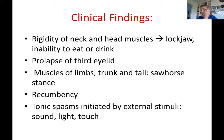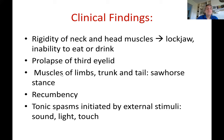The third eyelid normally comes and goes to protect the eye and clean the eyeball, but in tetanus it remains prolapsed the entire time. Because all limb, trunk, and tail muscles are contracting, the horse adopts a sawhorse stance. The tail is held in a flag position — erect and standing out. Horses eventually go into recumbency and are unable to get back up.